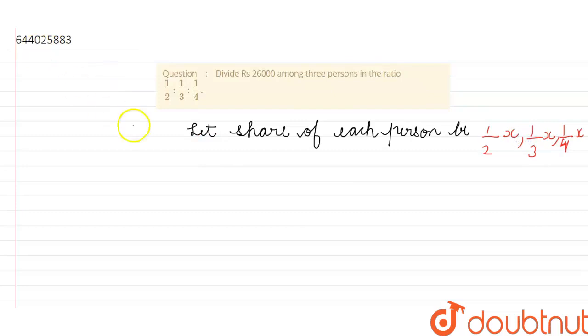So we know that 1 upon 2x plus 1 upon 3x plus 1 upon 4x is equal to 26,000. Now we have to find the value from this equation. So, we will take LCM, LCM will be 12.